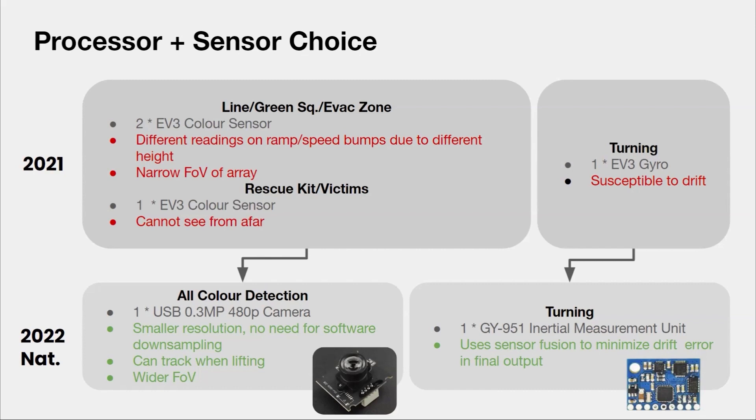For measuring angular displacement for accurate turns, an EV3 gyro was used last year, but like all gyros, they are susceptible to drift over time, which can create errors throughout the run. Hence, we tried to use an IMU which includes a compass and uses sensor fusion to filter out drift error in the output data.